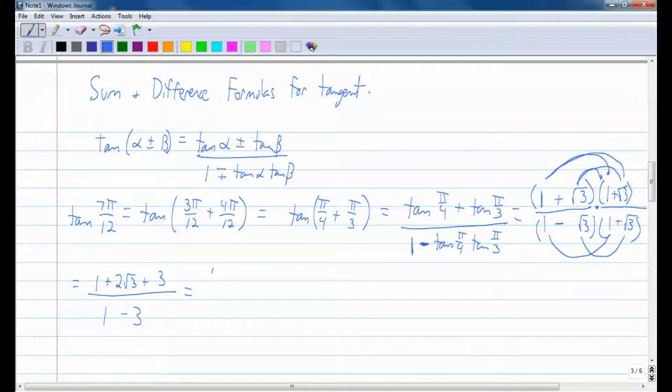Alright, so the numerator becomes 4 plus 2 square root of 3 over the denominator becomes negative 2. So what you want to do here is use piecewise division. Break this fraction up into its two pieces. You want to say 4 divided by negative 2, and then 2 square root of 3 divided by negative 2.